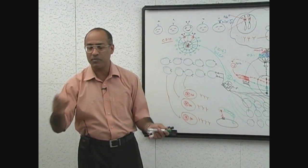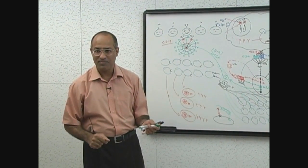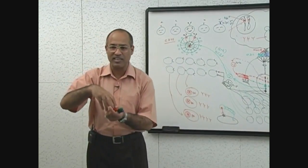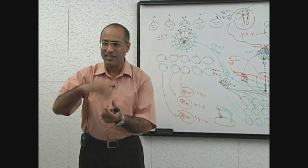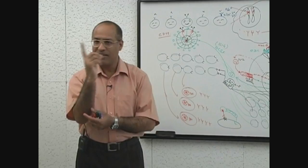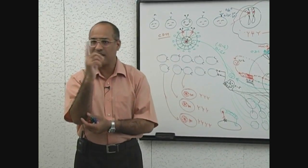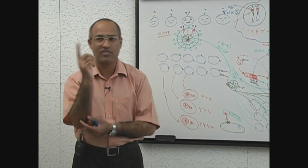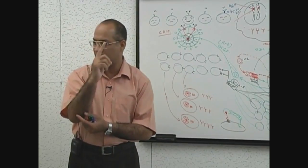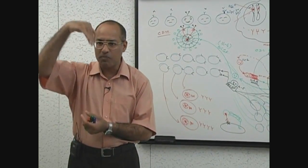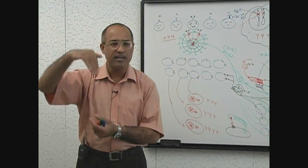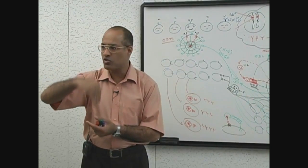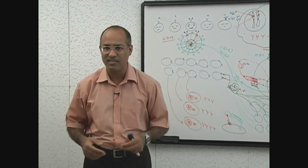Complement protein is present in your blood. When the antibody fixes on the bacteria, the antibody tail has an area which can activate the complement, and complements are activated at the surface of the bacteria. Activated complement produces holes in the bacteria and the bacteria dies.